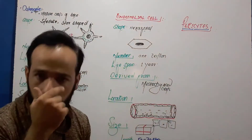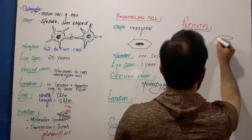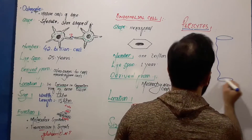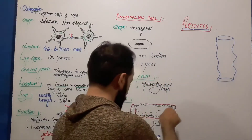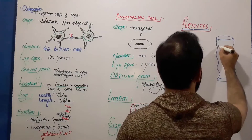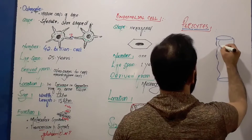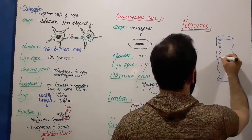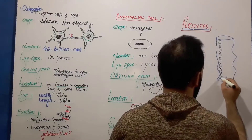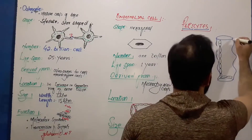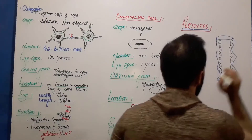Look carefully — I will draw a diagram here. For example, this is a blood vessel. In the previous lecture we said that the walls of blood vessels are made up of endothelial cells. These endothelial cells have no gap junctions between them.